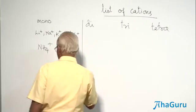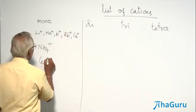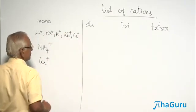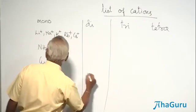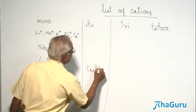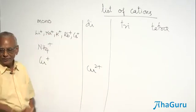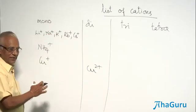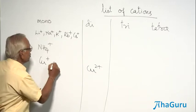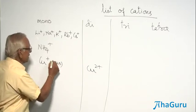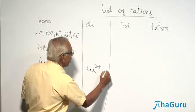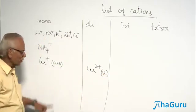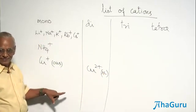In that category, copper has got +1, copper also has got +2, variable valency 1 and 2. The lower valency is usually called cuprous. The higher valency is usually called cupric.